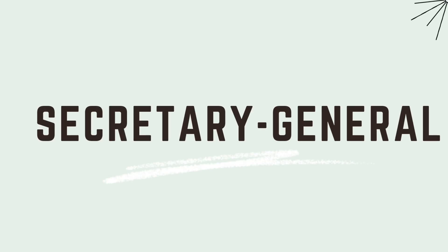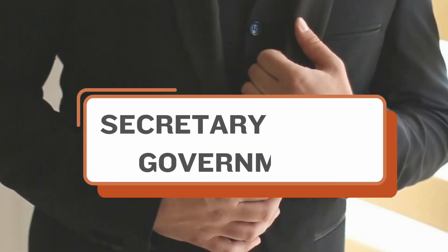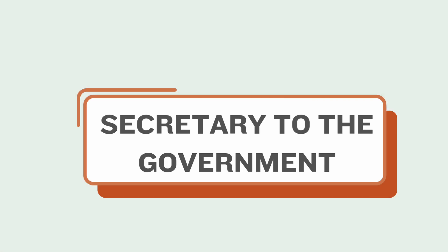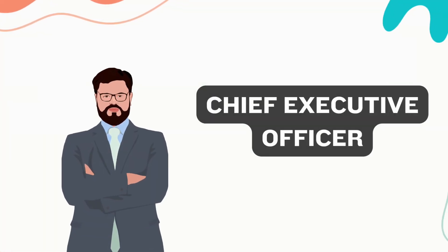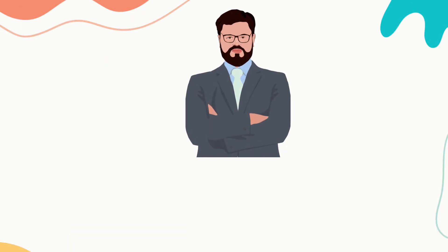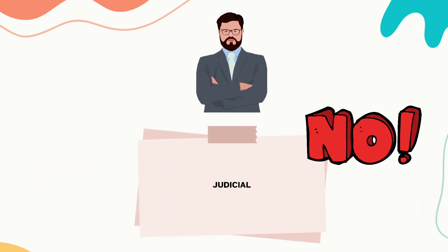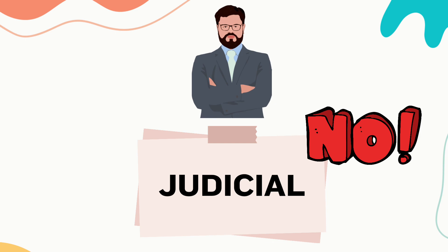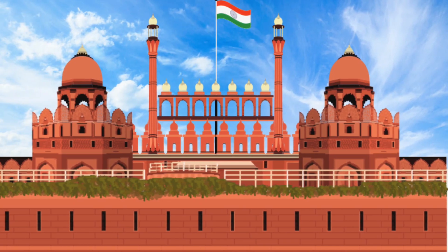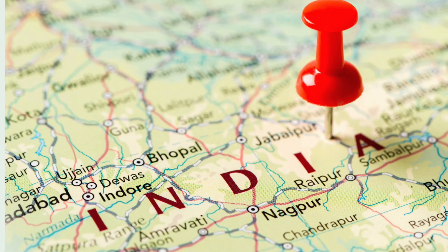The Act provides for the appointment of an officer of the rank of Secretary to the Government as Secretary General, who serves as the Chief Executive Officer of the Commission. The Secretary General is granted the authority to exercise all administrative and financial powers, except judicial functions, subject to the chairperson's control. The NHRC is headquartered in Delhi and has the option to establish regional or branch offices in other parts of India.